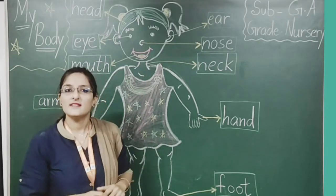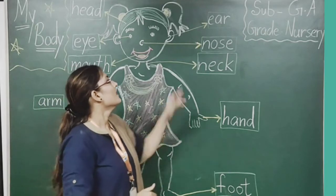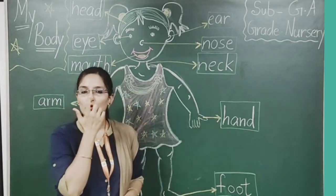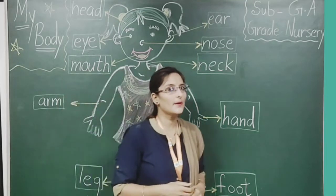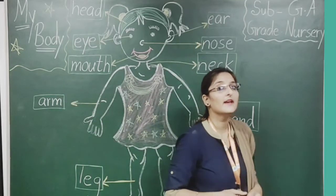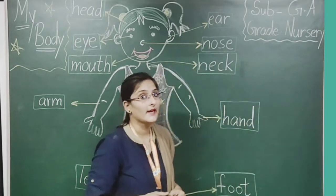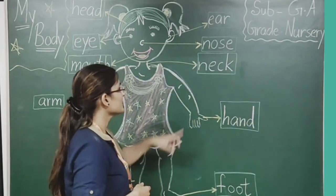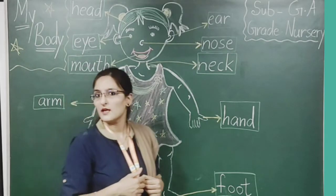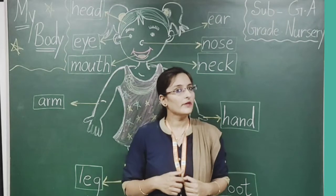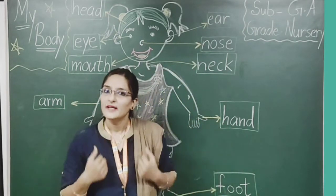Ear means the part with which we listen. Next is nose. With the help of our nose we can smell things. Next is neck — our neck. With the help of the neck, our head can move. Activity is done with the help of the neck.